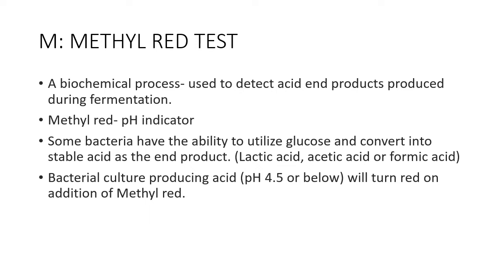M stands for Methyl Red test in IMVIC. It is a biochemical process used to detect sufficient acid production. The acid is the end product produced during glucose fermentation — that is the basic principle. Some bacteria have the ability to utilize glucose and convert it into stable acids such as lactic acid, acetic acid, or formic acid.